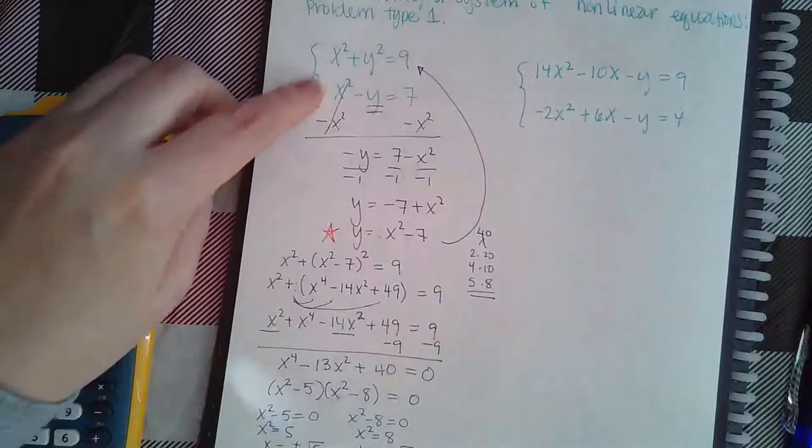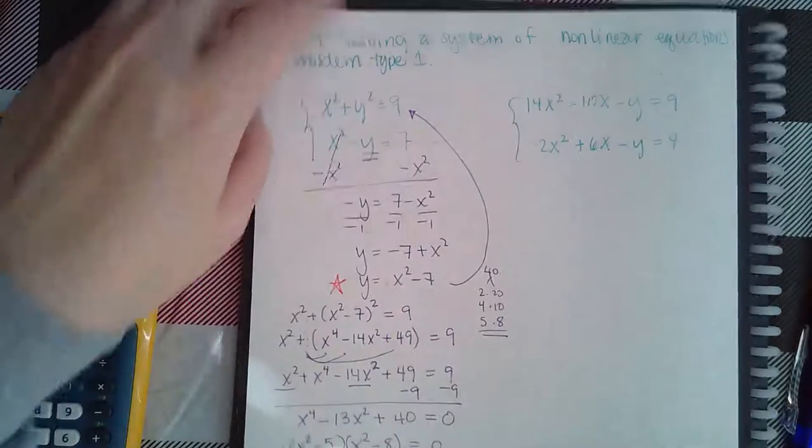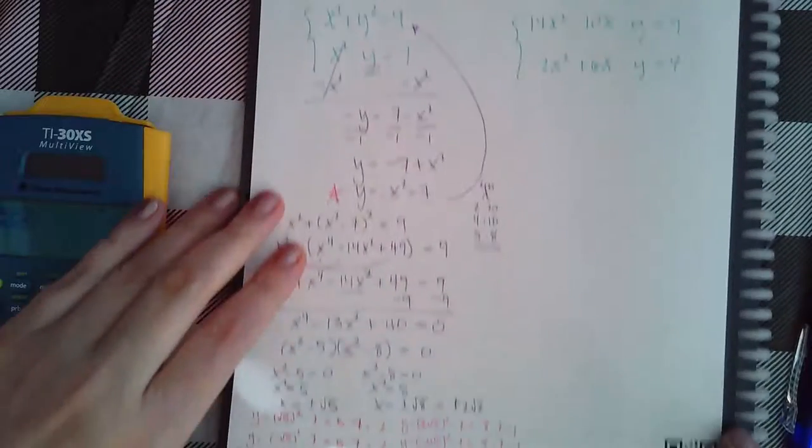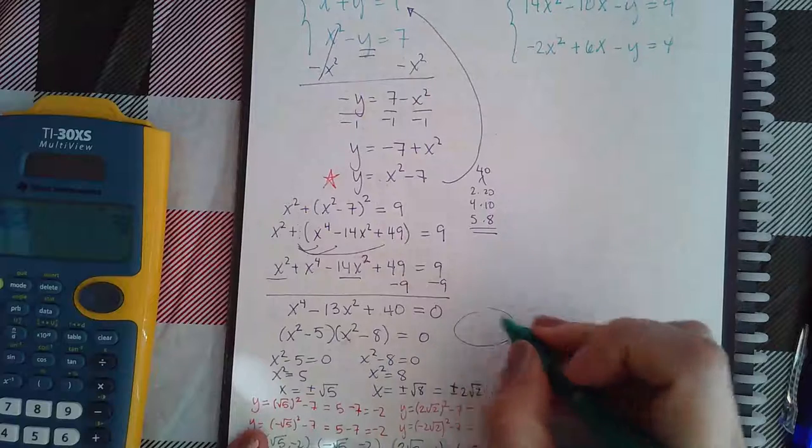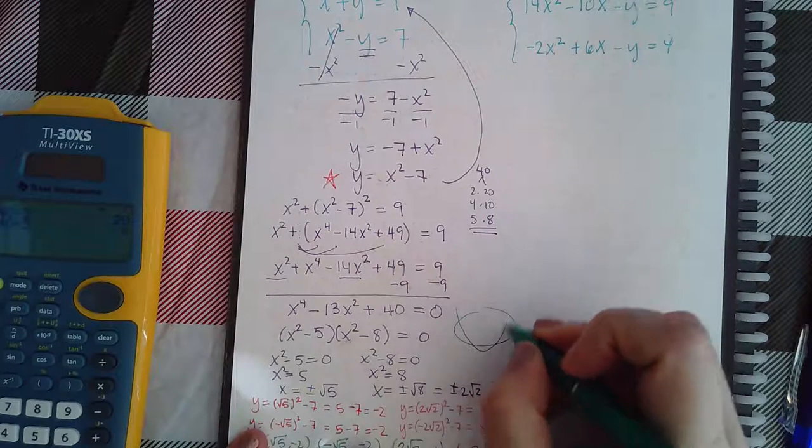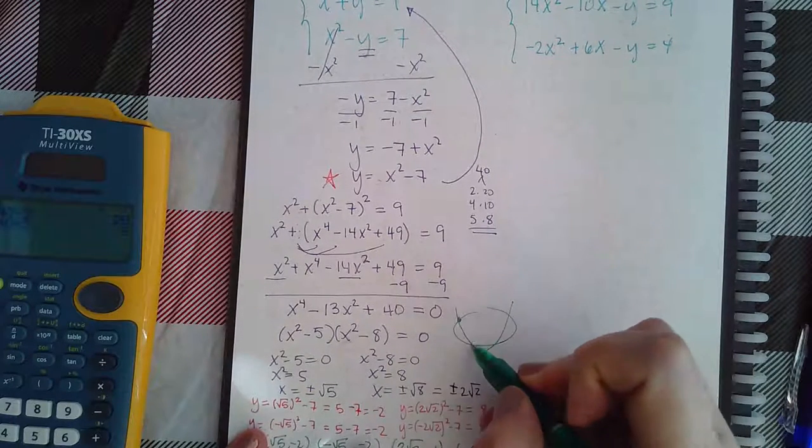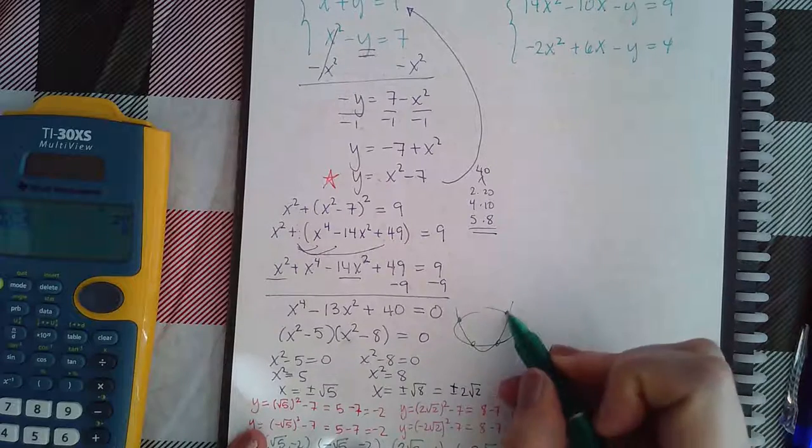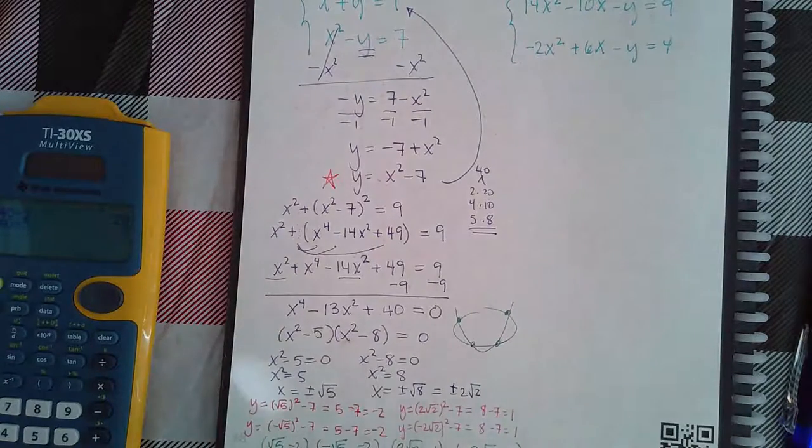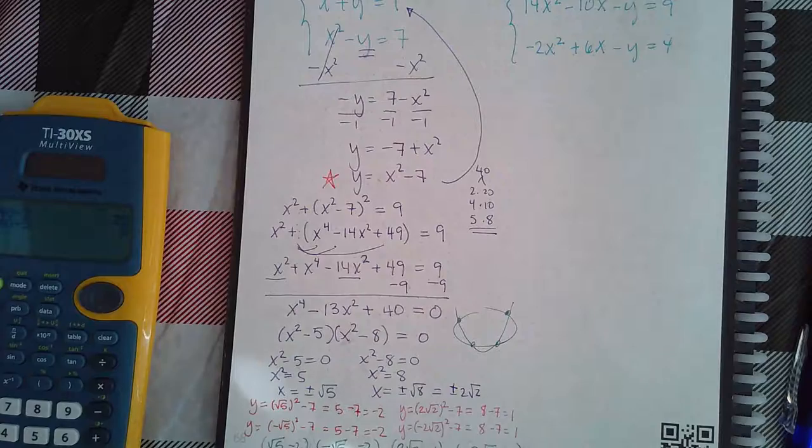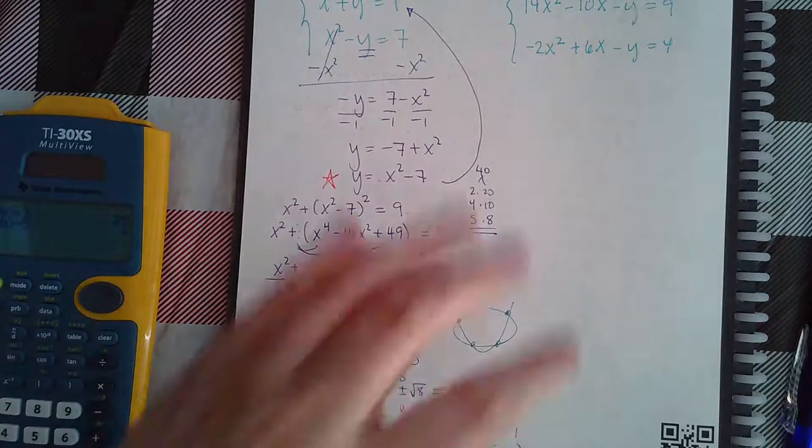All four of these are the solutions to this system. One of them is a circle and one of them is a parabola. If you can imagine you have a circle and let's say you have a parabola like that, there's your four solutions. That's kind of what's happening here.